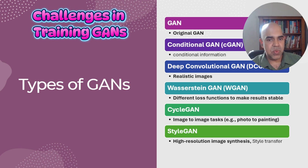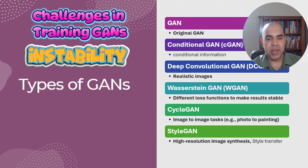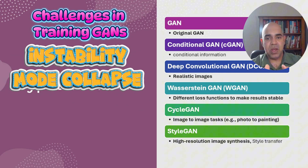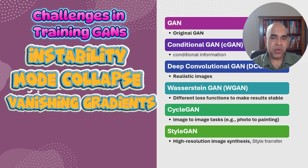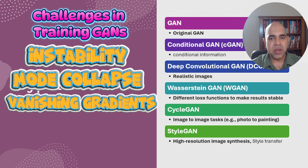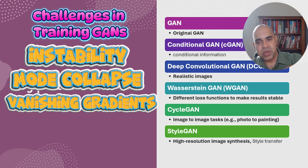There are several challenges in GANs. The first is instability — GANs are difficult to train because of their adversarial nature, and it is hard to reach a point where both networks improve consistently without one getting too far ahead. The second is mode collapse, where the generator learns to produce only a small range of outputs, ignoring much of the diversity in the real dataset. Third, there are vanishing gradients: if the discriminator becomes too good too quickly, the generator's gradients can vanish, making it difficult for the generator to learn. Many of these challenges have been addressed by GAN variants such as WGAN for stability and techniques like minibatch discrimination to combat mode collapse.